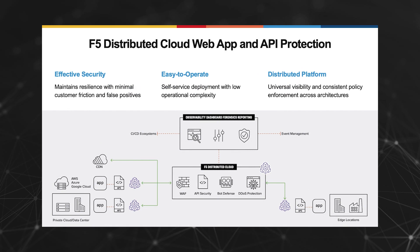While the OWASP top 10 is a flagship project for guidance on securing web applications, and OWASP has API top 10 and automated threats lab projects, there is considerable overlap between these projects. It is increasingly clear that integrated solutions that mitigate vulnerabilities and abuse for web apps and APIs are in order. F5 distributed cloud web app and API protection provides effective and easy-to-operate security in a cloud-delivered as-a-service platform, integrating web application firewall, API security, bot defense, and DDoS protection to help you put OWASP guidance into practice.